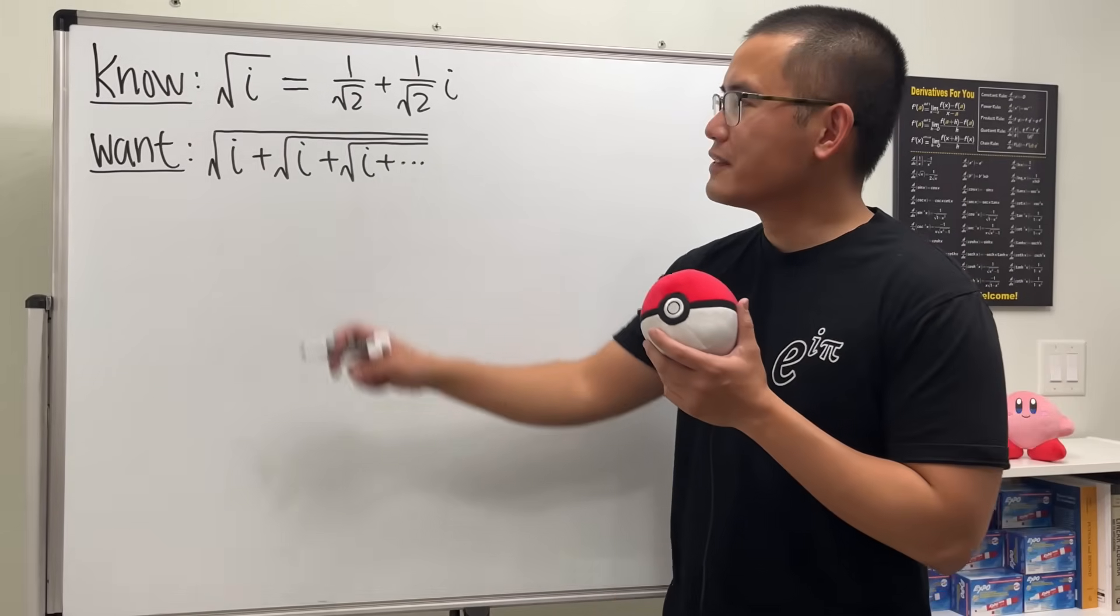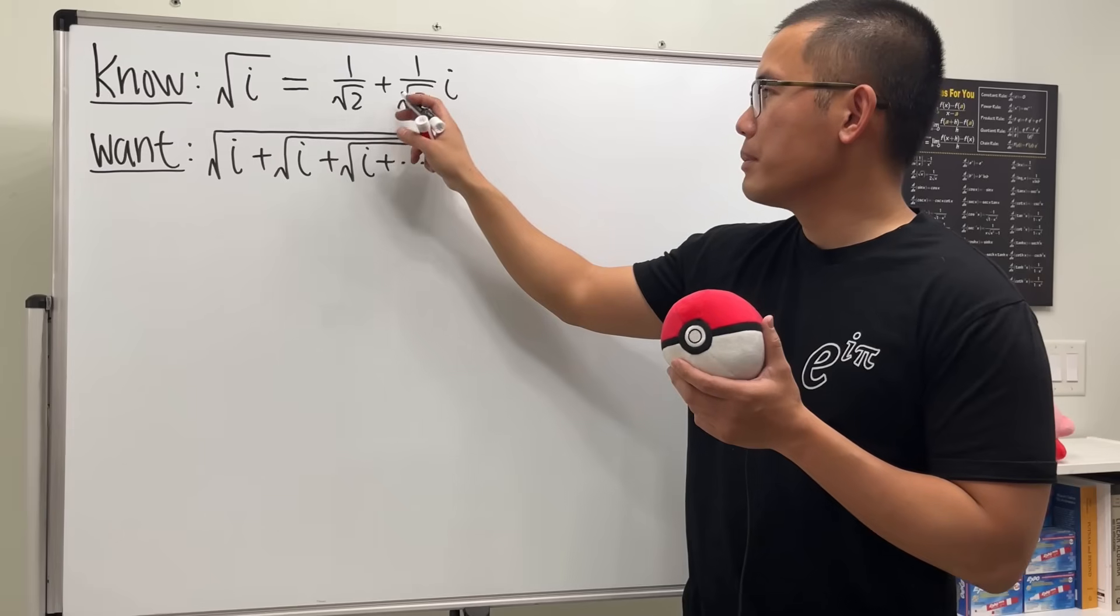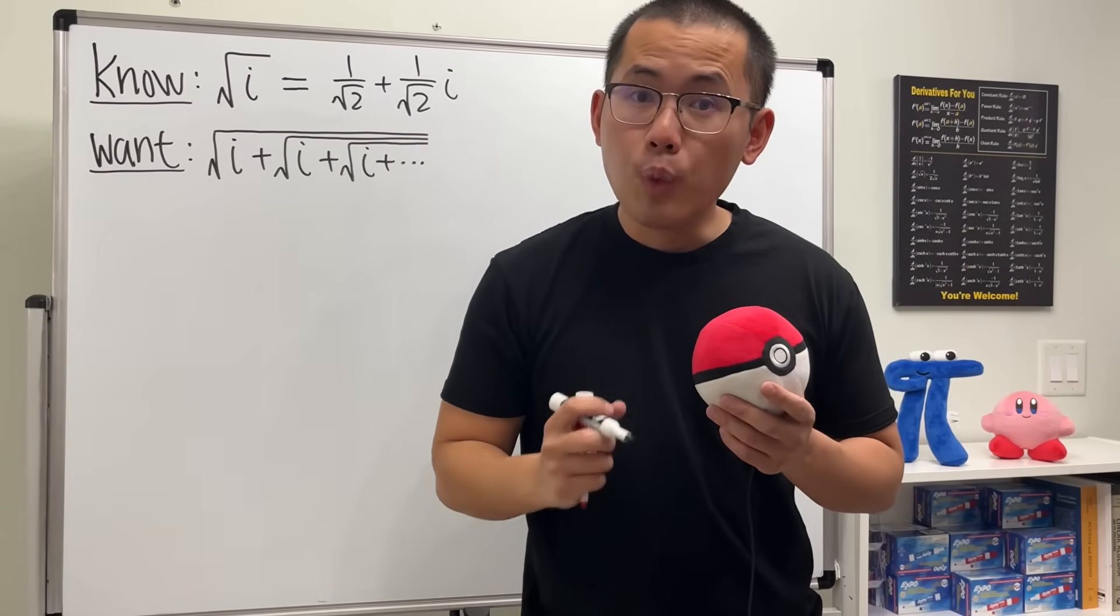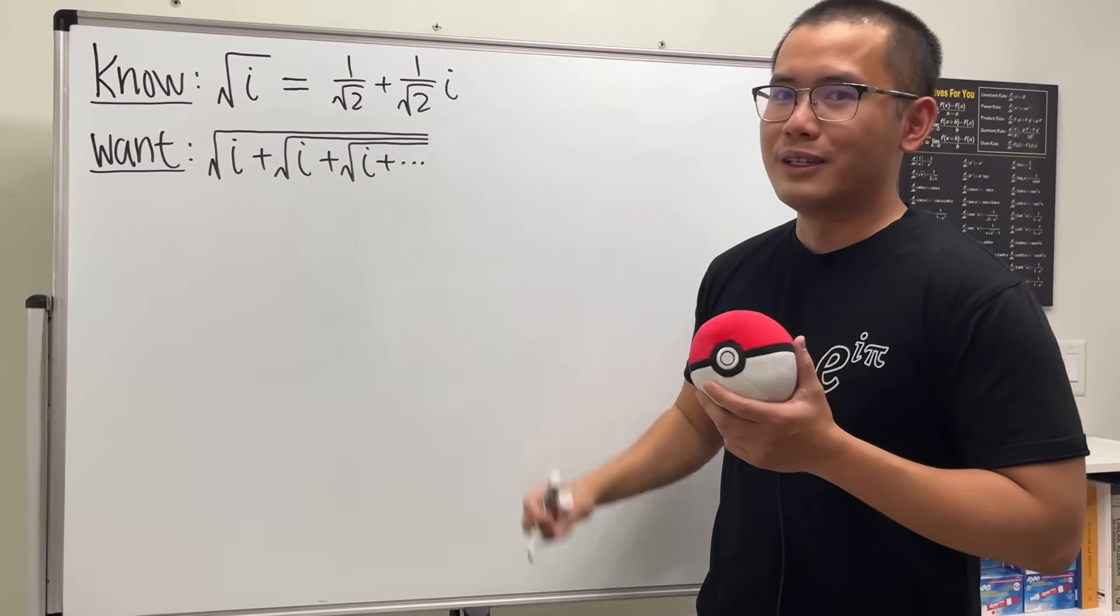As we all know, when we have square root of i, this right here is just equal to 1 over square root of 2 plus 1 over square root of 2 i. But have you ever thought about what if we have square root of i plus square root of i plus square root of i and so on?